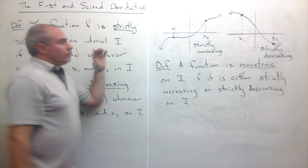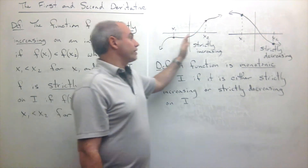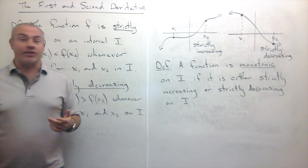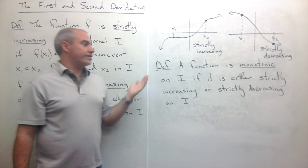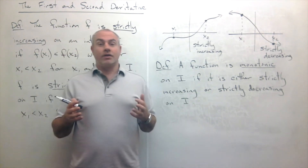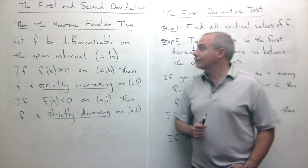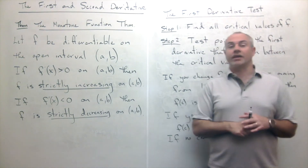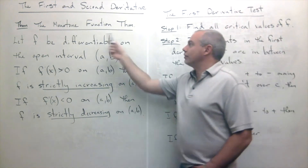If we're always going up from left to right over an interval, it's strictly increasing; always going downward, it's strictly decreasing. Another definition we can add is that we call a function monotonic if it's either strictly increasing or strictly decreasing on an interval — if it's always the same thing on that interval. Now let's talk about the Monotone Function Theorem, which is a different way of thinking about what it means to be strictly increasing and strictly decreasing.